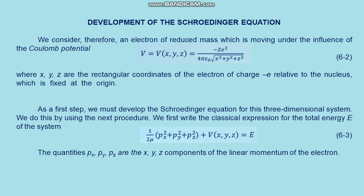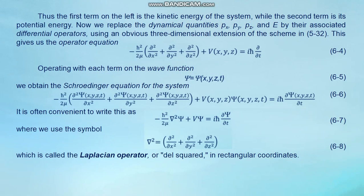As a first step we must develop the Schrödinger equation for this three-dimensional system. We do this by first writing the classical expression for the total energy E of the system, formula 6.3. The quantities p_x, p_y, and p_z are the x, y, z components of the linear momentum of the electron. The first term on the left is the kinetic energy of the system, while the second term is the potential energy.